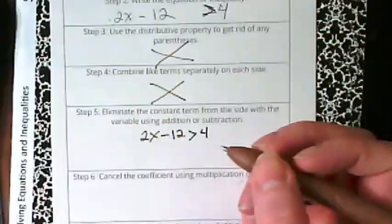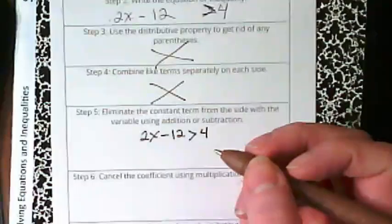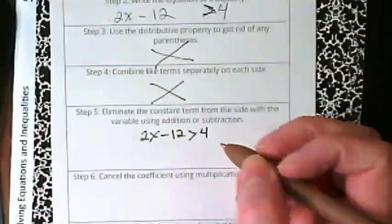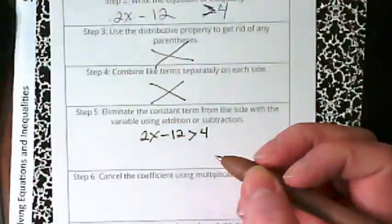We're going to follow these steps just as though it was an equation. When it says eliminate the constant term from the side with the variable using addition or subtraction, we basically are looking for what can we zero out? And what can we zero out here?